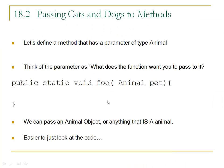When you assign an object to a reference variable, this is the same as passing an object to a method. So think of this method here — we've defined a public static void foo and it takes an animal. When you call this method, what can you pass to it? Think of the method signature: what does the method want you to pass in? This method wants an animal. So I can pass it an animal. Can I pass it a dog or a cat? Yes — so it's like an assignment. When you pass something to this variable, I could pass a dog or a cat.